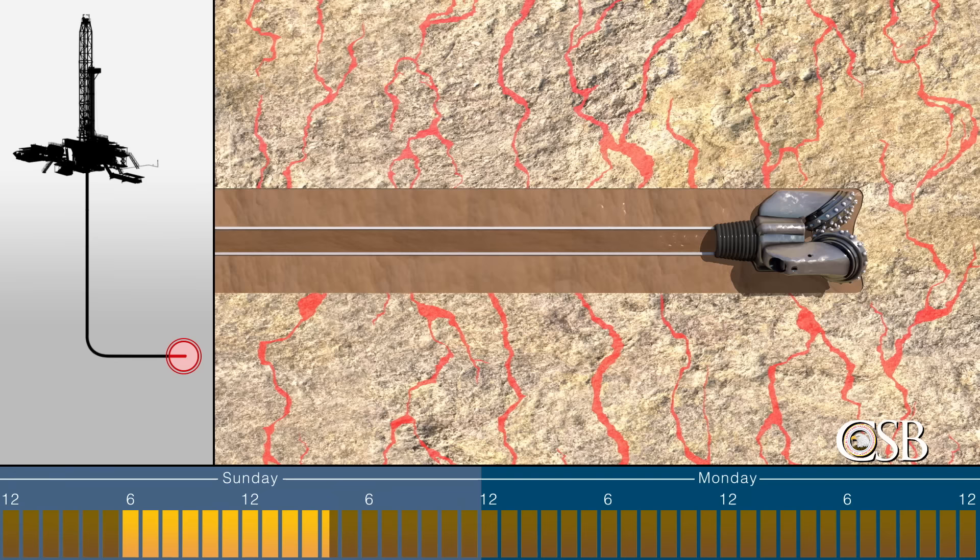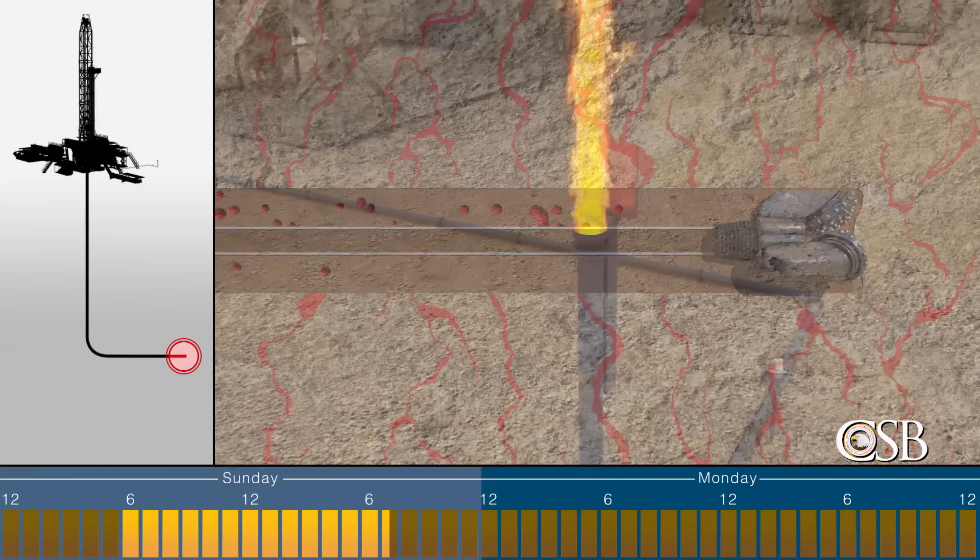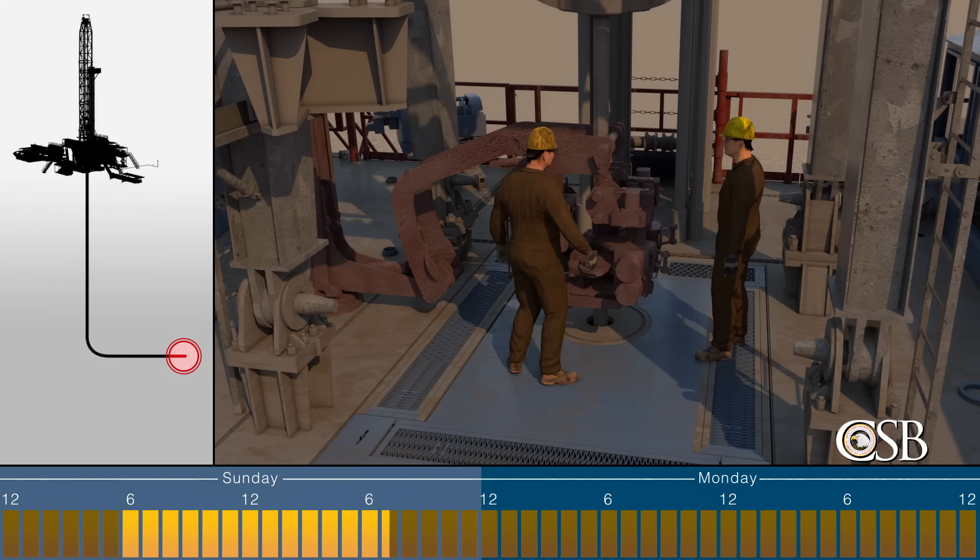The crew first circulated the well for three hours by pumping mud down the drill pipe and up the annulus. The flare continued while the well was circulating, an indication that the well remained underbalanced. While circulating, the Red Mountain representatives discussed how to remove the drill pipe from the well in order to replace the drill bit.